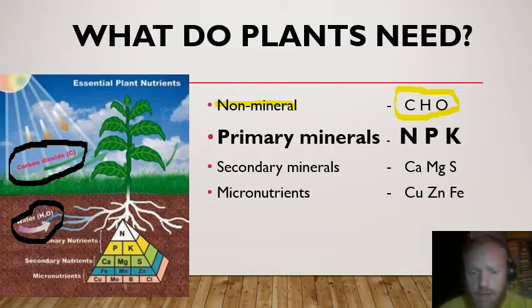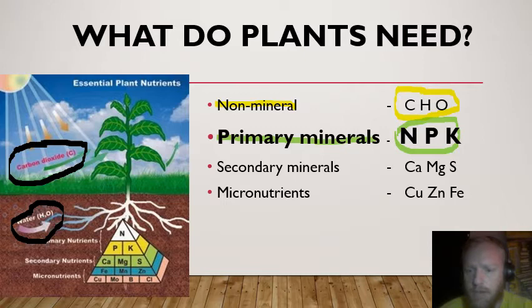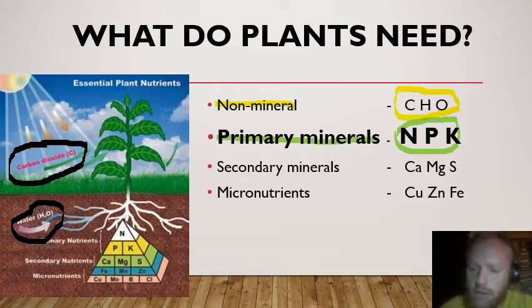The next category is the primary minerals. These are absolutely vital for the plant — the plant will die without N, P, and K: nitrogen, phosphorus, and potassium. These are the most important ones, written in bold, and they are the ones we are going to discuss in more detail in the next lessons.